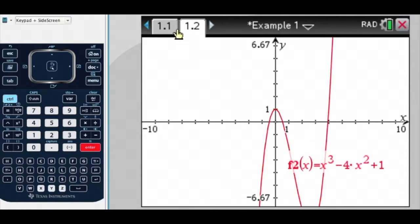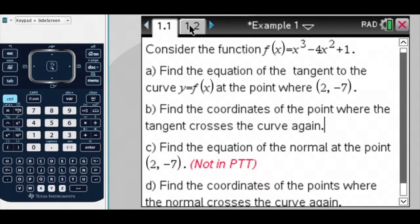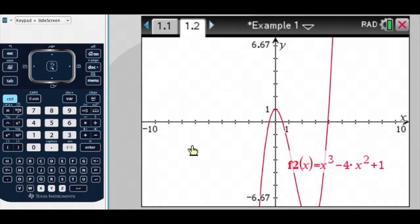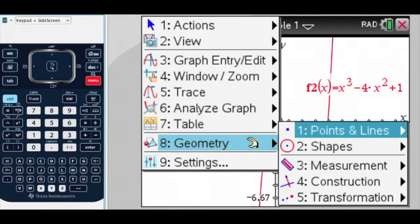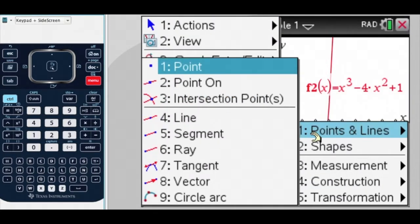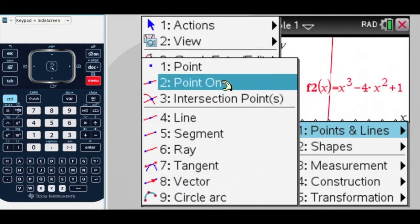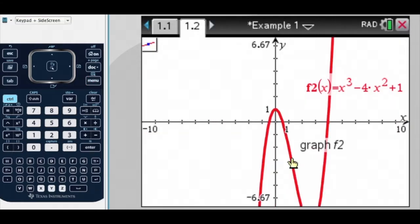And I want to find the tangent at the point (2, -7), so let's put that point on the curve first. I might just move this. Okay, so menu, we can go Geometry, Points and Lines, and Point On. So I'm going to find a point on this curve.